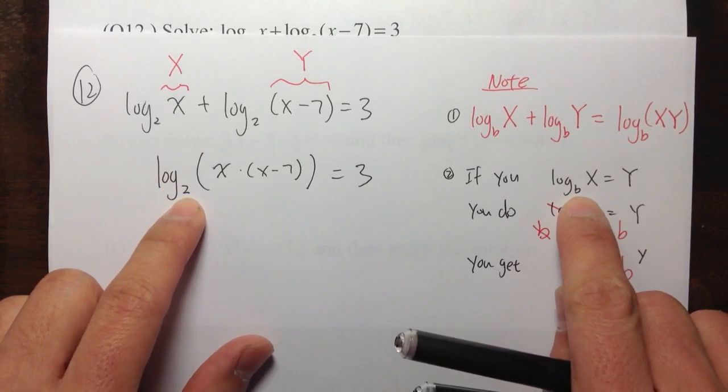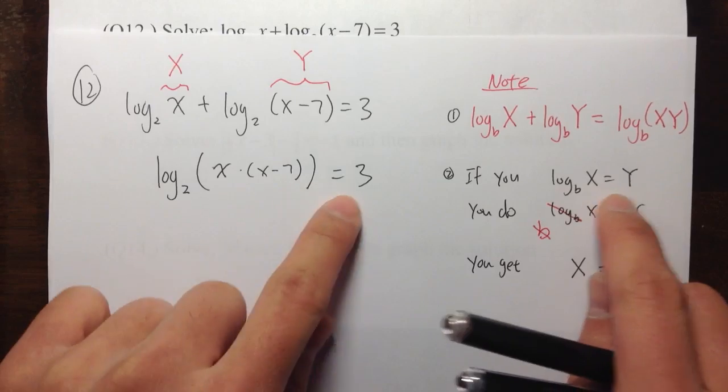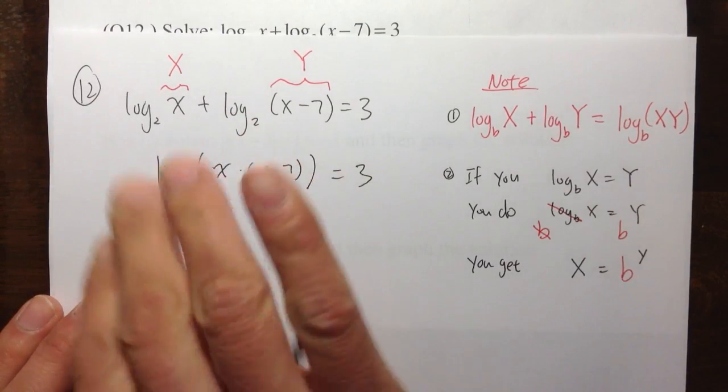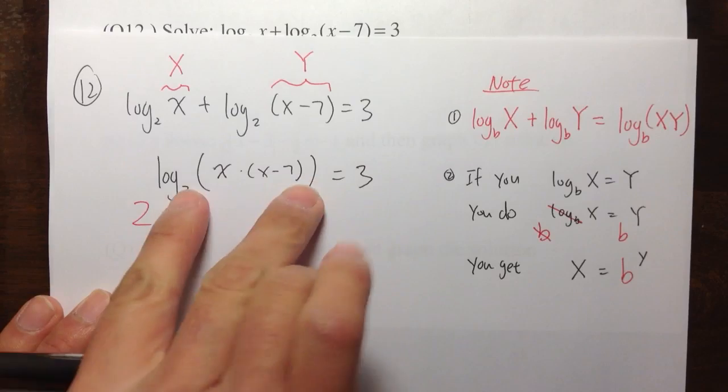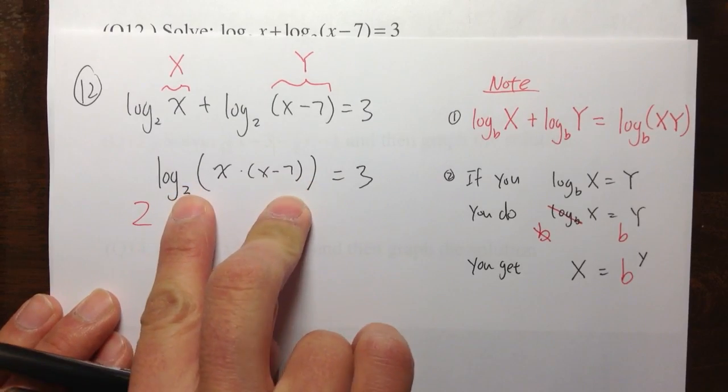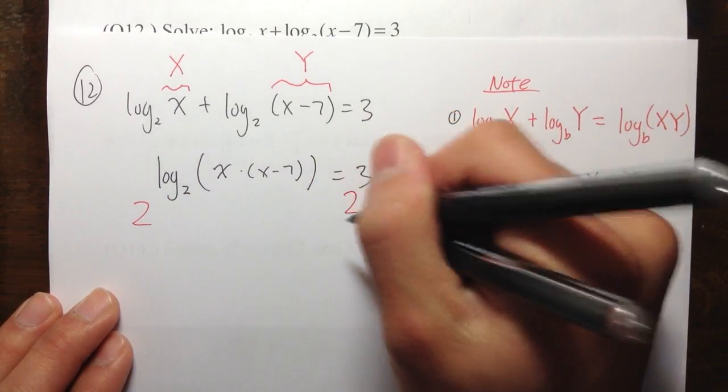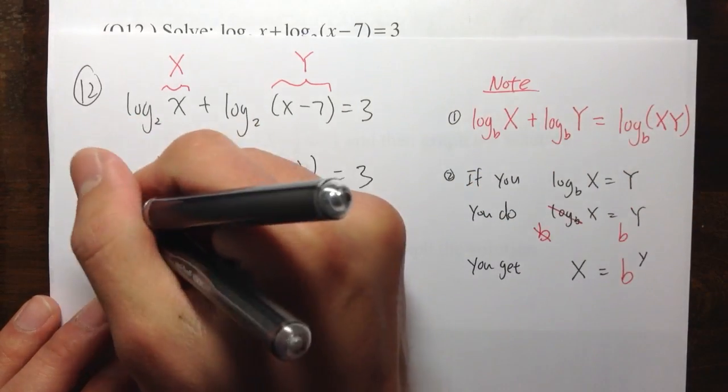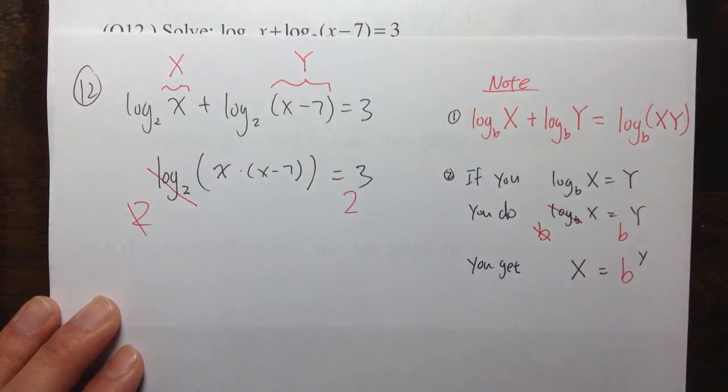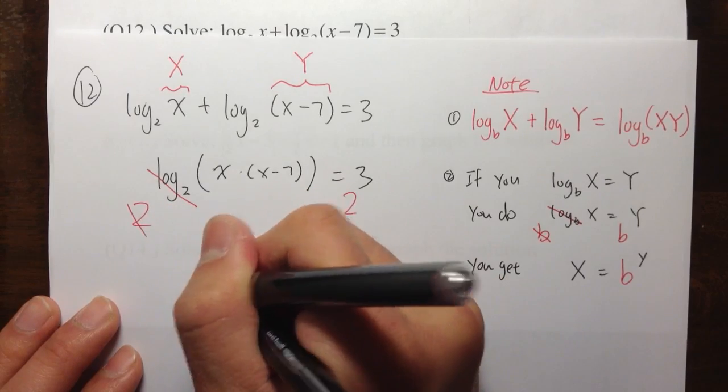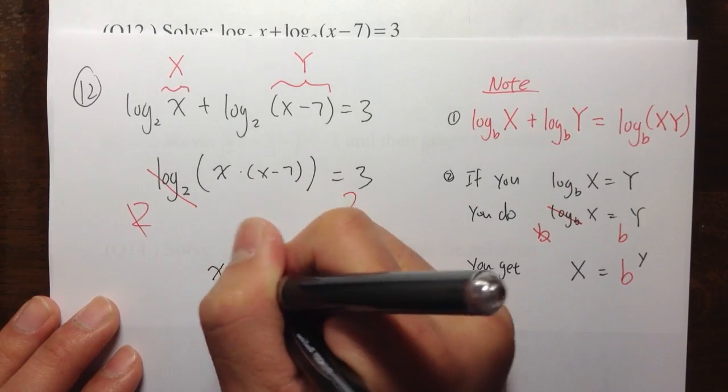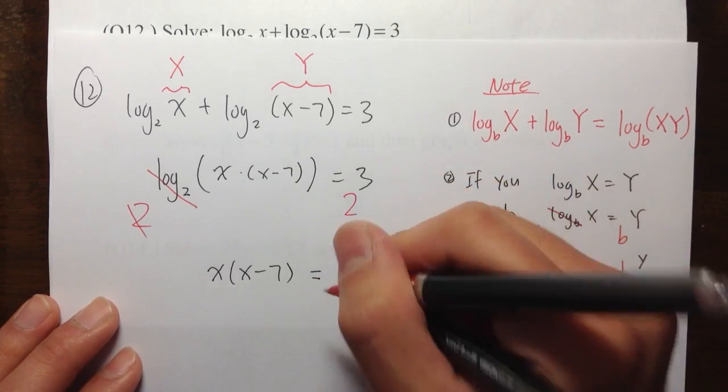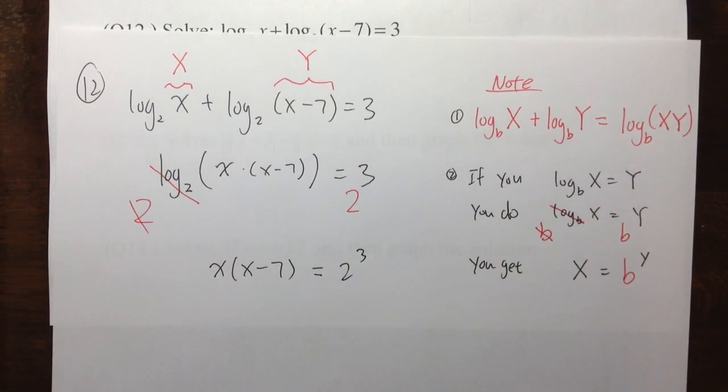When we see log of some base of something, it's equal to a number. Then what we're going to do is put 2 right here, 2 raised to that power. We're looking at this as the exponent right now. And then 2 raised to that as the exponent. This 2 and the log base 2 will cancel. And we'll get a regular expression, X times X minus 7. That's equal to 2 to the third power.